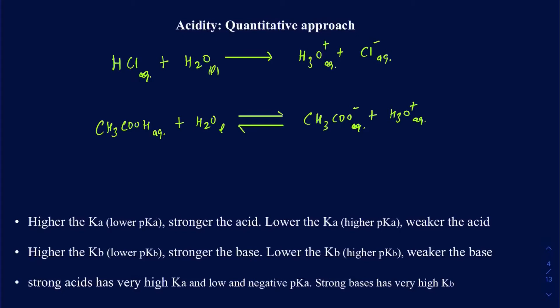To figure out how much of this acid has been dissociated into ions, or how much H3O+ has been produced, we can write an equilibrium constant expression, which is the Ka in this case. It's just another equilibrium constant expression, but since it's in terms of acids we write 'a' here.